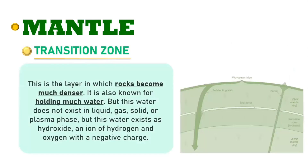The next layer of the mantle is called the transition zone. This is the layer in which rocks become much denser. It is also known for holding much water. But this water does not exist in liquid, gas, solid, or plasma phase — this water exists as hydroxide, an ion of hydrogen and oxygen with a negative charge.